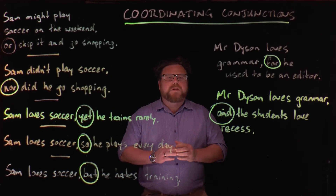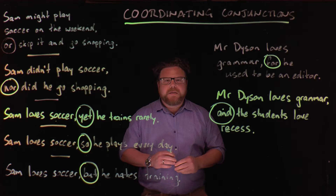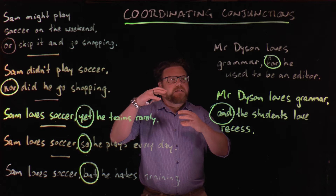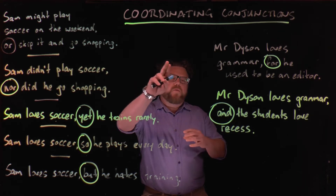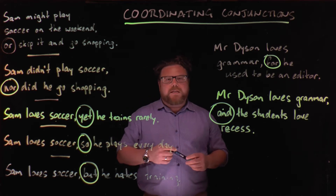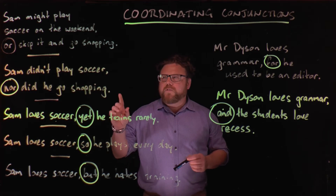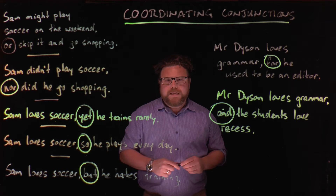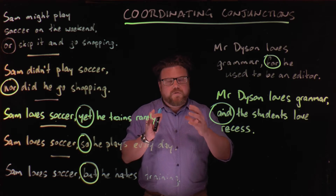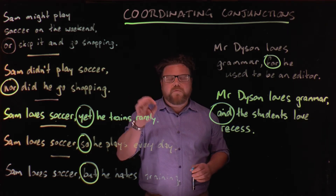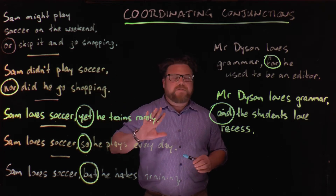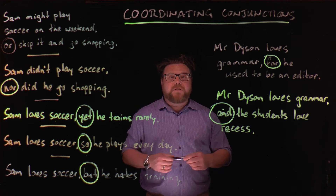In a previous lesson when we were talking about compound sentences, I was explaining how the independent clauses within a compound sentence are connected using a coordinating conjunction and a comma. Now I wanted to talk about coordinating conjunctions for a little while here because they're very useful little words and there are lots of different types. Depending on what you want to say in your sentence, you need to choose the correct coordinating conjunction. So I'm just going to take you through the seven main coordinating conjunctions and explain how they're used.